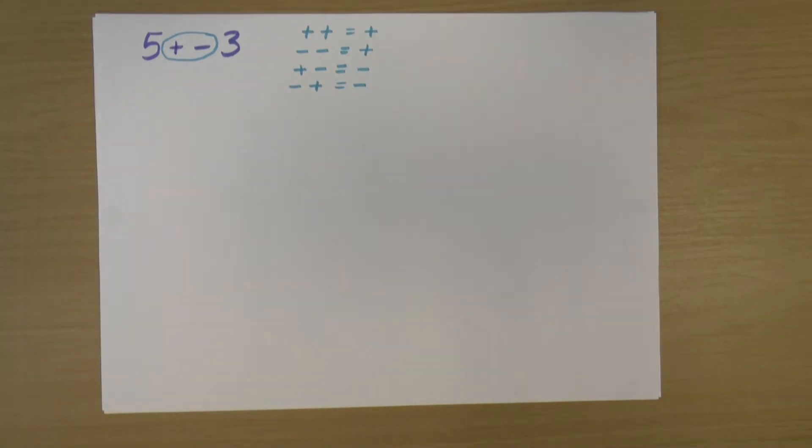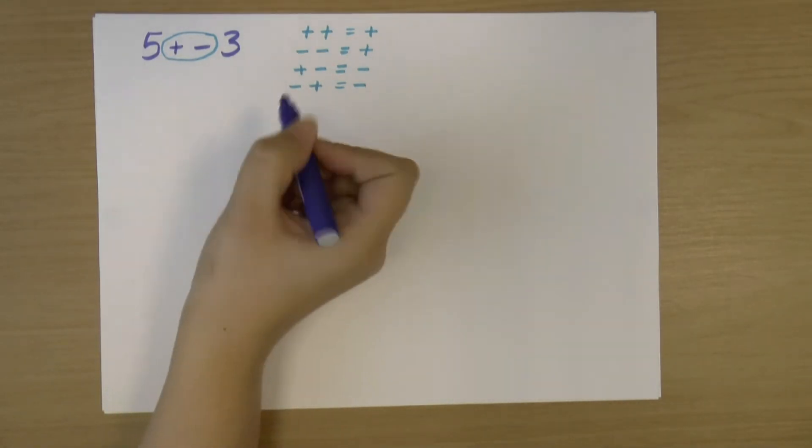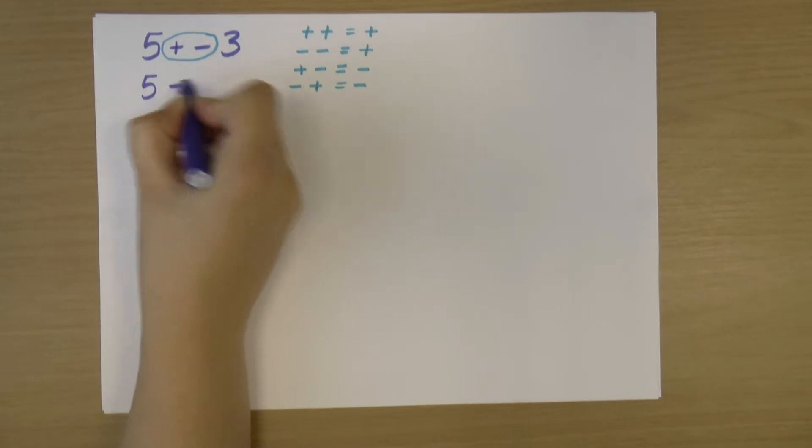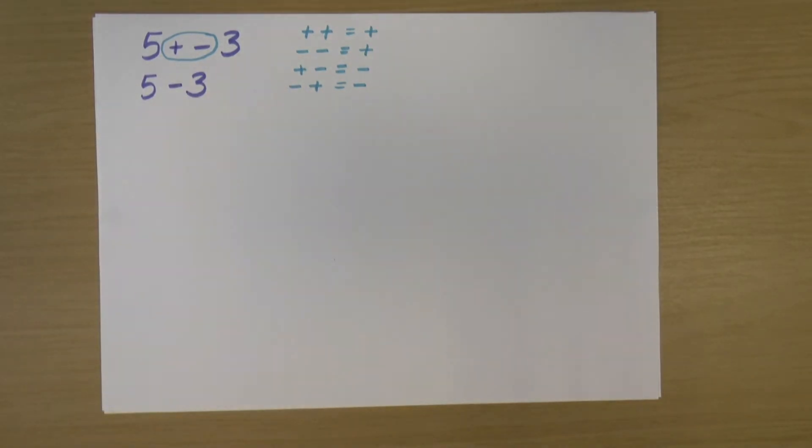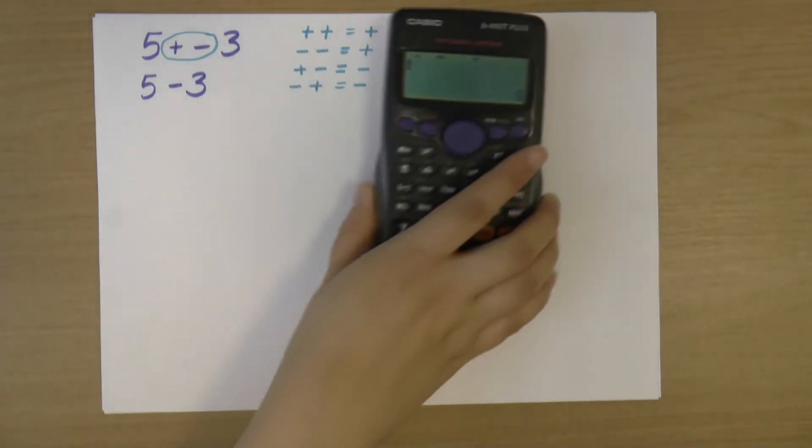So you can see here I've got a plus and a minus, so what I can do is I can replace that with a minus. So that becomes 5 minus 3.